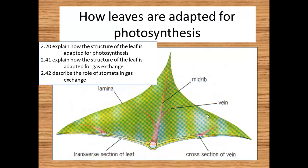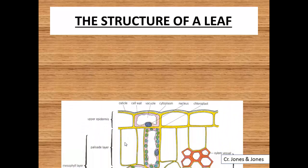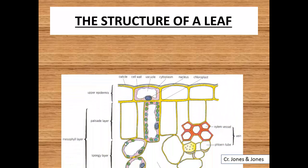What we are going to do is look at a transverse section of the leaf — a section as you would cut through a leaf. We are going to look at it first in a diagrammatic form and then look at some photos taken down a microscope.